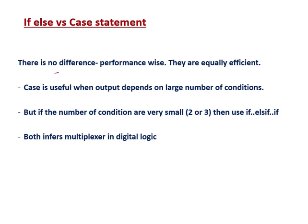For example, if you have 100 conditions, you just don't sit and write 100 if and else — your code doesn't look good. In that scenario, we better prepare a case statement. It will be easy to write case statement than if-else when you have many conditions. But if you have a very small number of conditions — for example 2, 3, 4, 5 — then you can go with nested if-else. Both enforce a multiplexer in digital logic: if you write if-else or include case statement, both infer a multiplexer when your synthesis tool synthesizes your code.